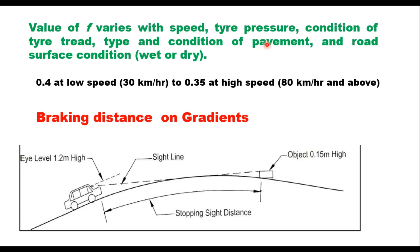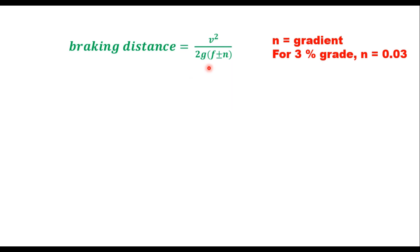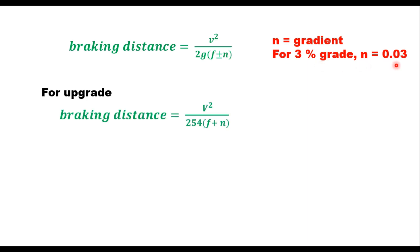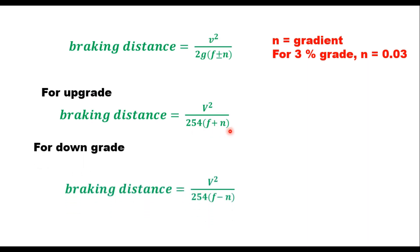Braking distance on gradients: when the vehicle moves on a vertical curve, the gradient affects the braking distance. When the vehicle is going uphill, the force due to gravity acts against the direction of movement, so braking distance will be less. When the vehicle moves downhill, gravity acts in the direction of movement, requiring more distance to stop. The general equation is: braking distance on gradient = v² / (2g(f ± n)), where n is the gradient as a fraction (e.g., 3% → n = 0.03). In km/h form: for upgrade, d2 = v² / (254(f + n)); for downgrade, d2 = v² / (254(f − n)).